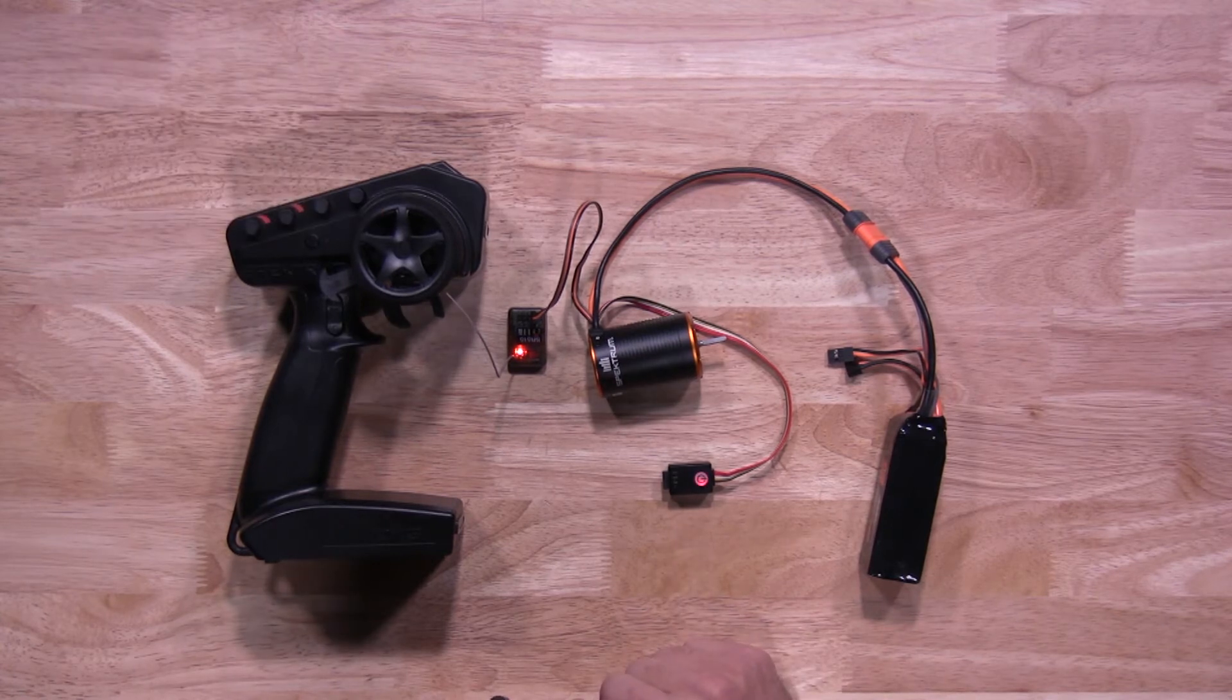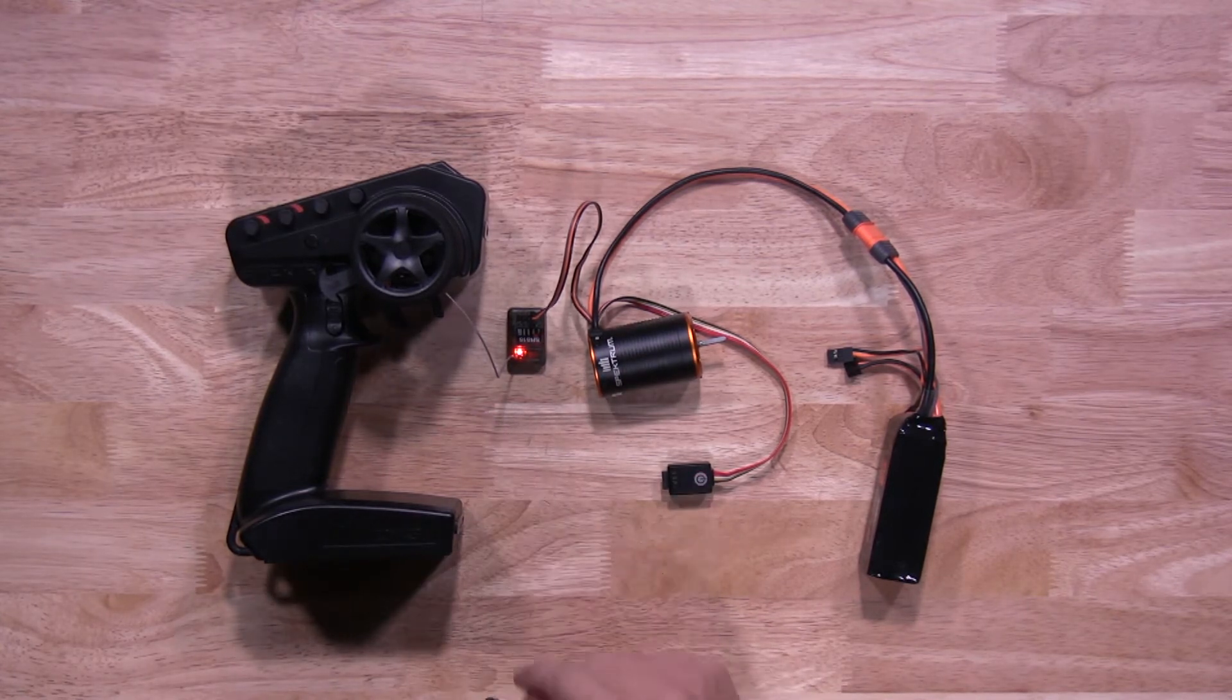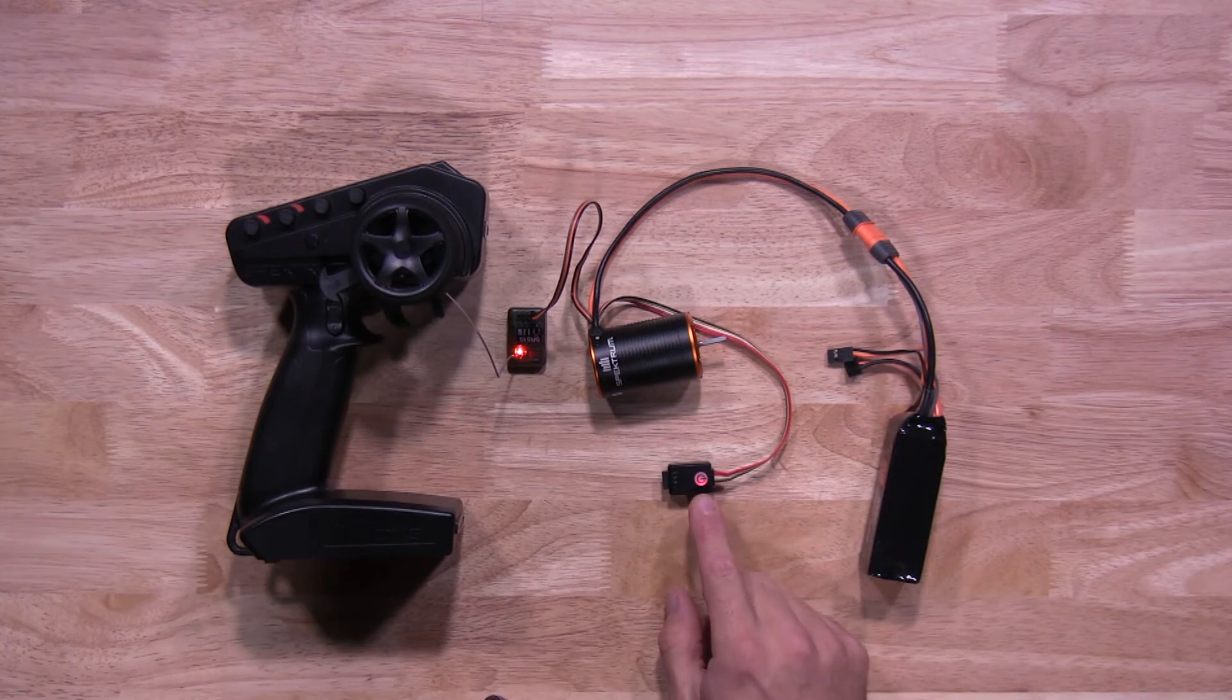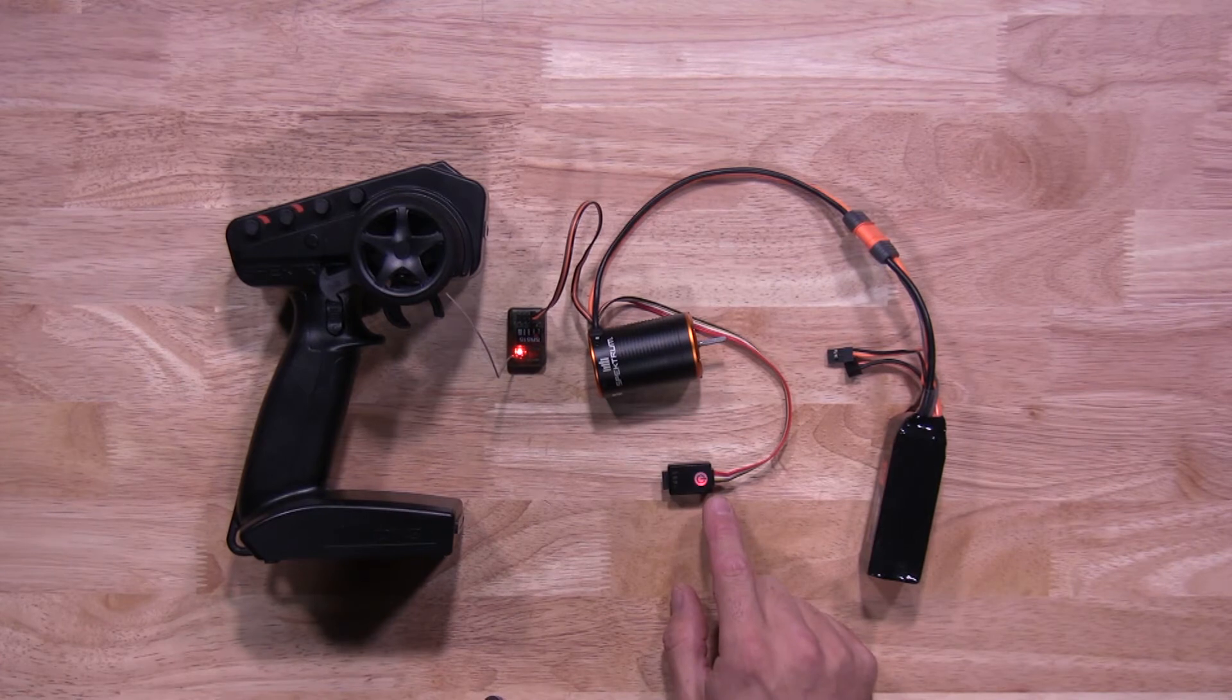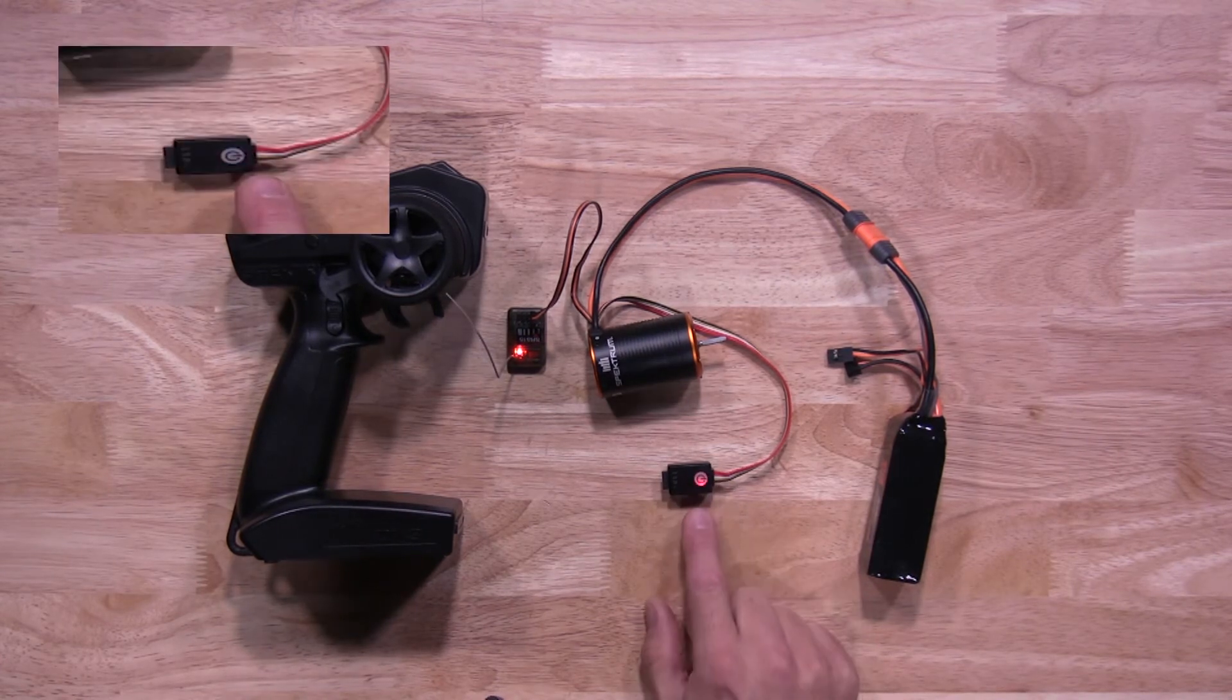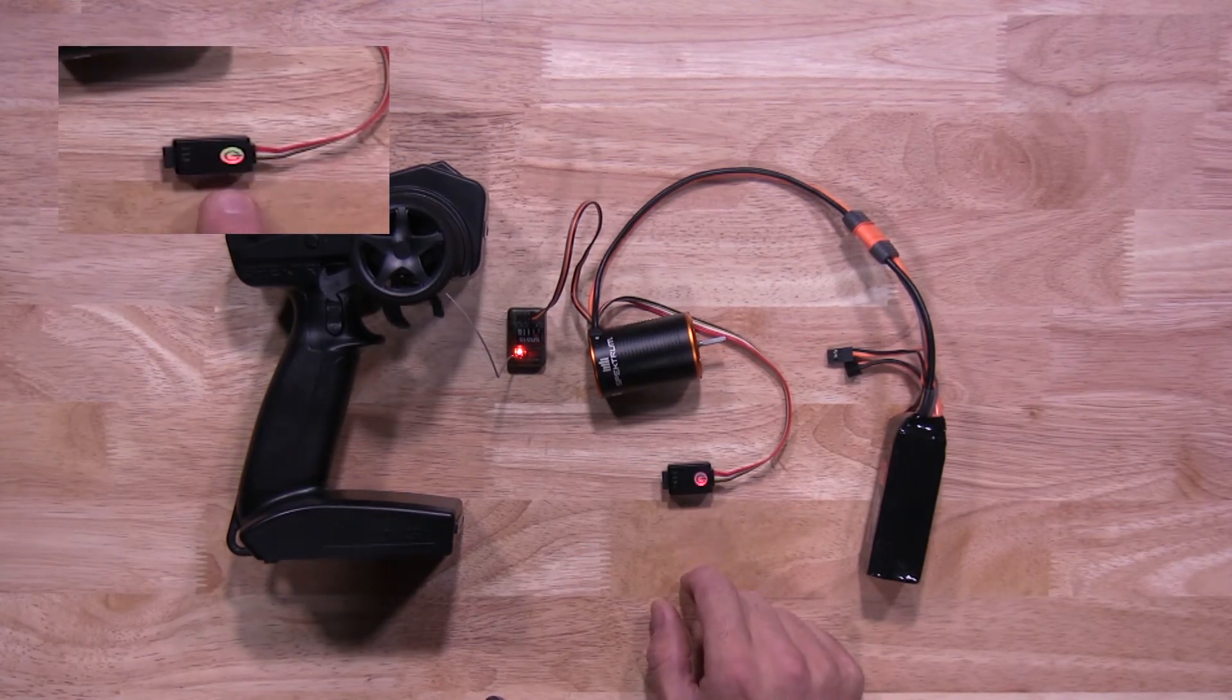Your first setting is the neutral position, so without any input on your throttle, you'll be hitting the on-off button one time. You'll be pressing and releasing. You'll see a green light flashing to let you know that setting has been saved.